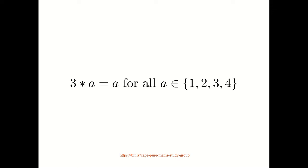We just need to prove that 3 star a is equal to a for all a in the set {1, 2, 3, 4}. Alright, so we don't need to show that 3 star a is equal to a is equal to a star 3, because we already know that 3 star a is equal to a star 3, because star is commutative.